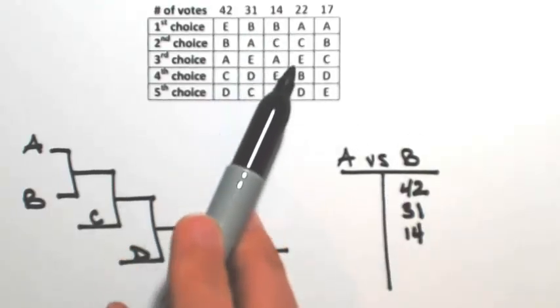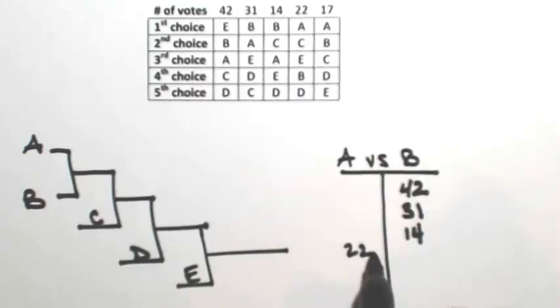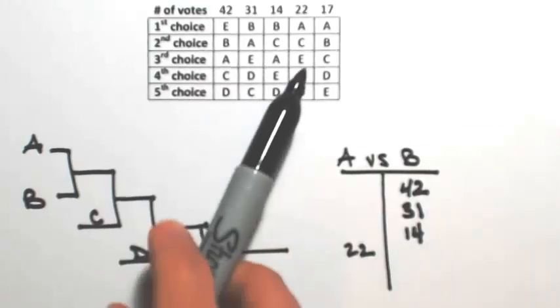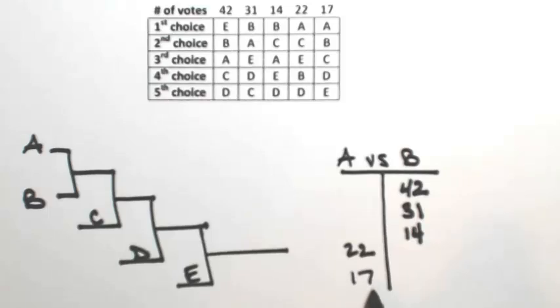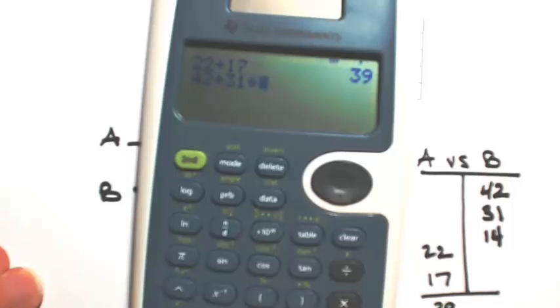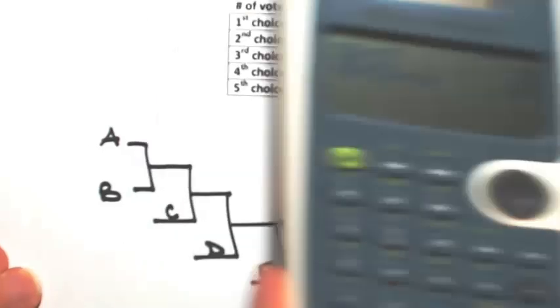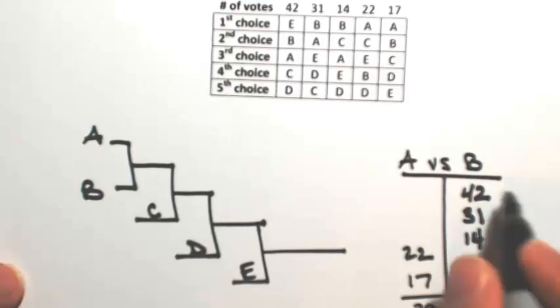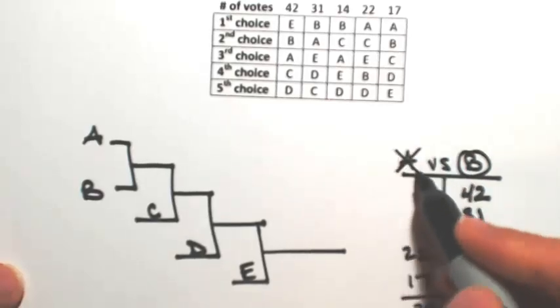In the fourth one, A is over B, so A gets 22. In the last column, A is over B, so A gets 17. It's clear to see that B won. Let's get the votes down here anyway. So 22 plus 17 is 39, and 42 plus 31 and 14 is 87. Clearly B was the winner of that, so A is out.